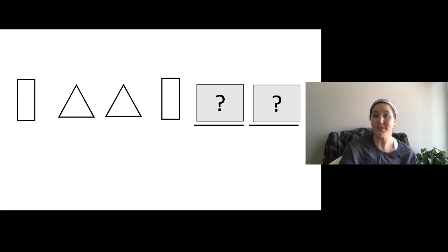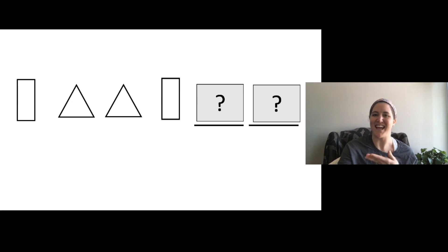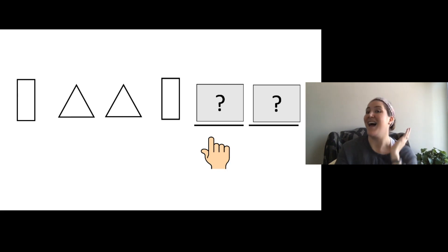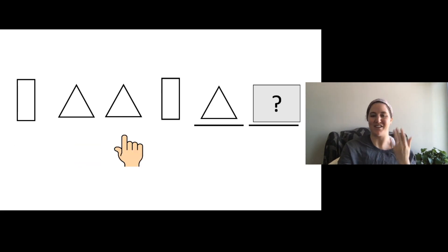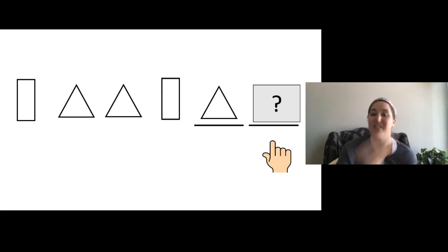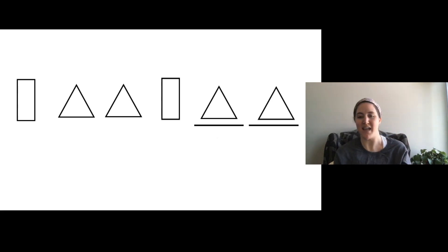Alright, let's do another one together. Looks like this one has rectangles and triangles. Let's figure out what comes next: rectangle, triangle, triangle, rectangle — what do you think it is? Say it again: rectangle, triangle, triangle, rectangle, triangle. Very good — drew a triangle! Rectangle, triangle, triangle, rectangle, triangle, triangle. This one had two triangles at the end. Oh, I love doing patterns!